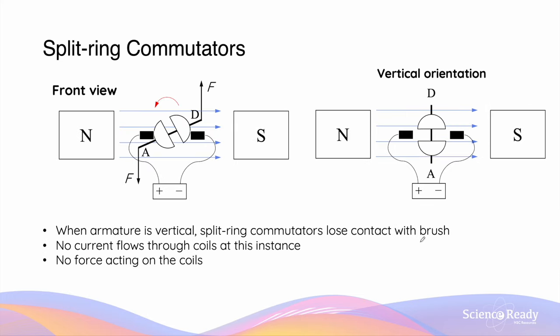If we add the brushes to the picture, the brushes will remain in the same place while the commutators rotate. This specific setup between the commutators and brushes is very important, because when the armature reaches the vertical orientation, the two commutators are also vertically oriented.